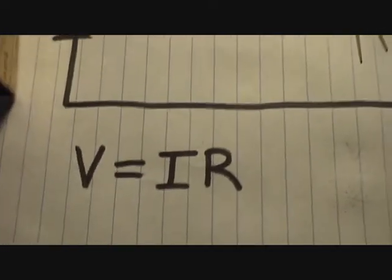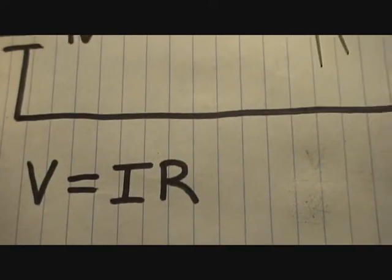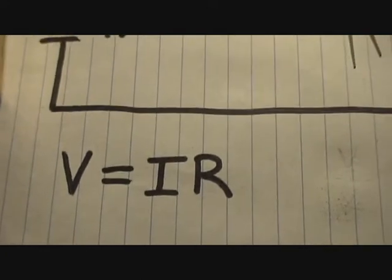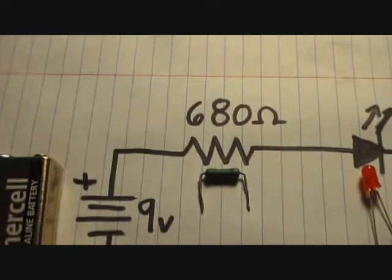And to figure out what your current is, we use Ohm's law, which is volts equals current times R, where I is the current in amps. And so what we do is we take, let's see, we want to find the current, but we have the volts and the ohms, or resistance.